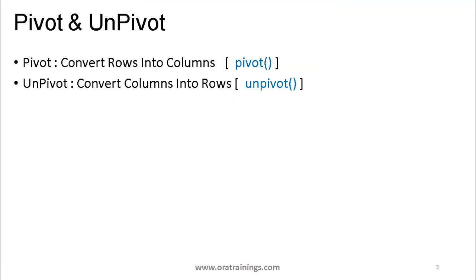Let us understand what pivot and unpivot are. In this session, we'll concentrate only on pivot. Pivot means it converts rows into columns. Unpivot is the opposite — it converts columns into rows. That's called unpivot.